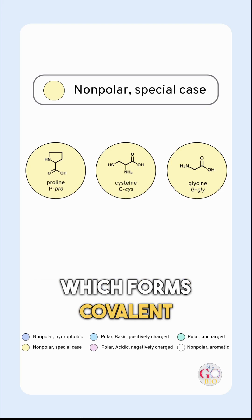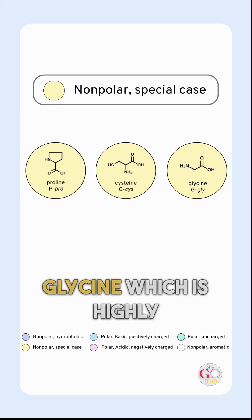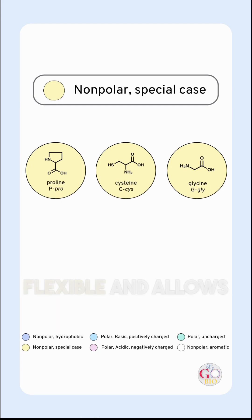Cysteine forms covalent disulfide bonds between protein chains, and glycine is highly flexible and allows tight turns in proteins.